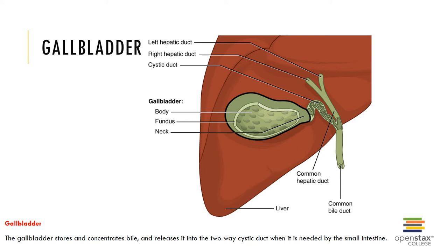The gallbladder stores and concentrates bile until needed by the small intestine. It is divided into three regions: the fundus, body, and neck. The release of CCK by the duodenum triggers dilation of the sphincter of Oddi and contraction of the gallbladder, ejecting bile into the duodenum through the duodenal ampulla.